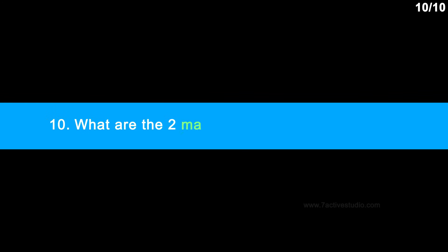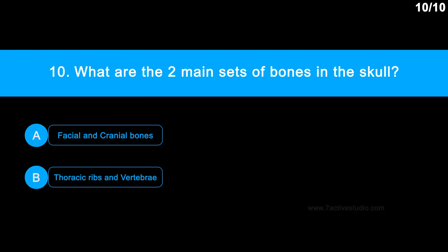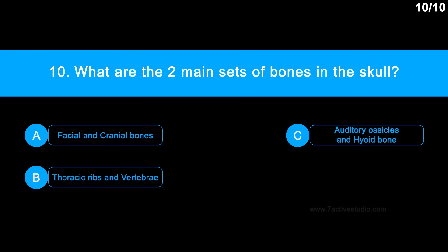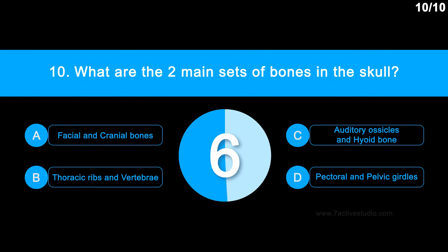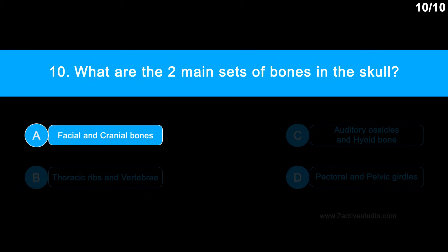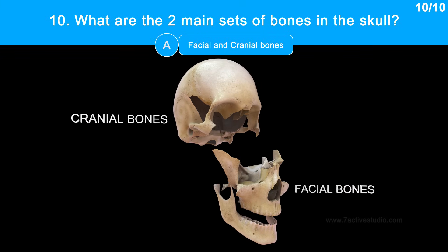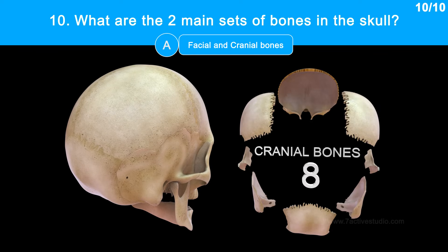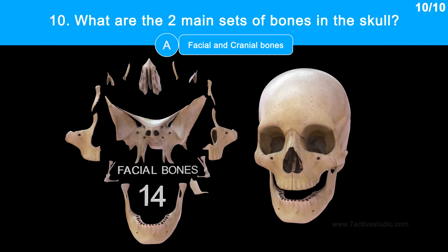Question 10: What are the two main sets of bones in the skull? Option A: facial and cranial bones. Option B: thoracic ribs and vertebrae. Option C: auditory ossicles and hyoid bone. Option D: pectoral and pelvic girdles. The correct answer is option A, facial and cranial bones. The bones of the skull can be considered as two groups: cranium, consisting of the cranial roof and cranial base with 8 bones, and facial bones comprising 14 bones that make up the face.